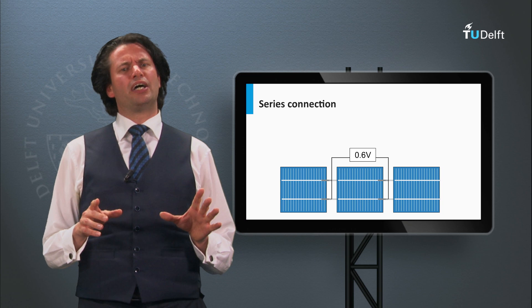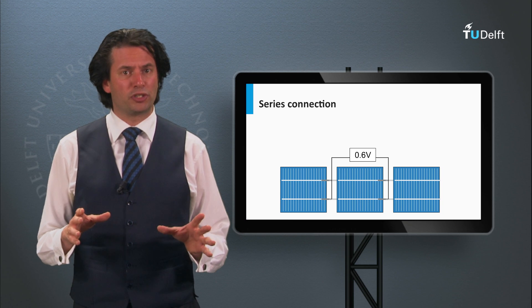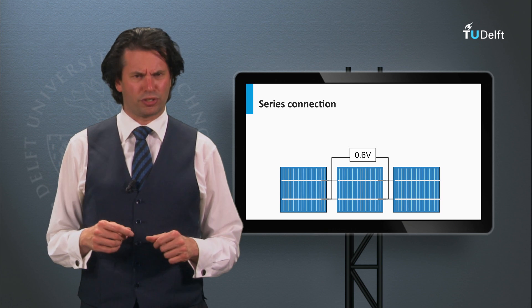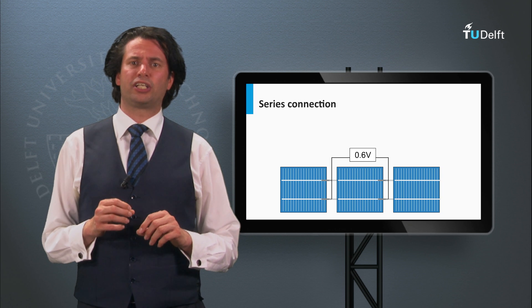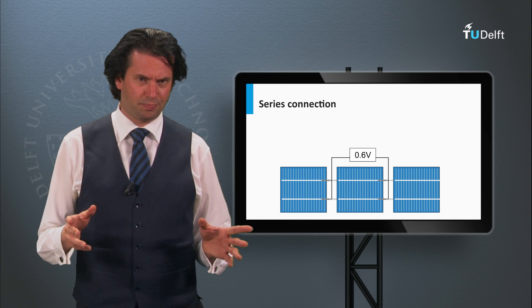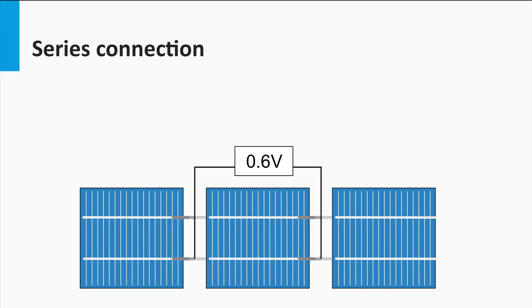Now we look at how we make a solar module out of an ensemble of solar cells. We can connect the solar cells in different ways. First, we have the series connection, as shown in this figure. In a series connection, the voltages add up. It means that if the open-circuit voltage of one cell is equal to 0.6V, the string of the three cells deliver an open-circuit voltage of 1.8V.